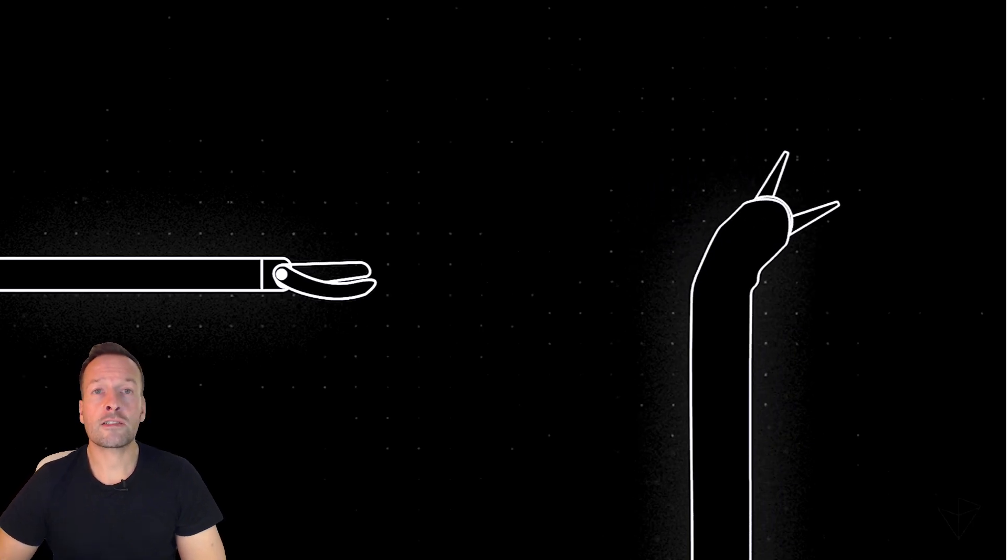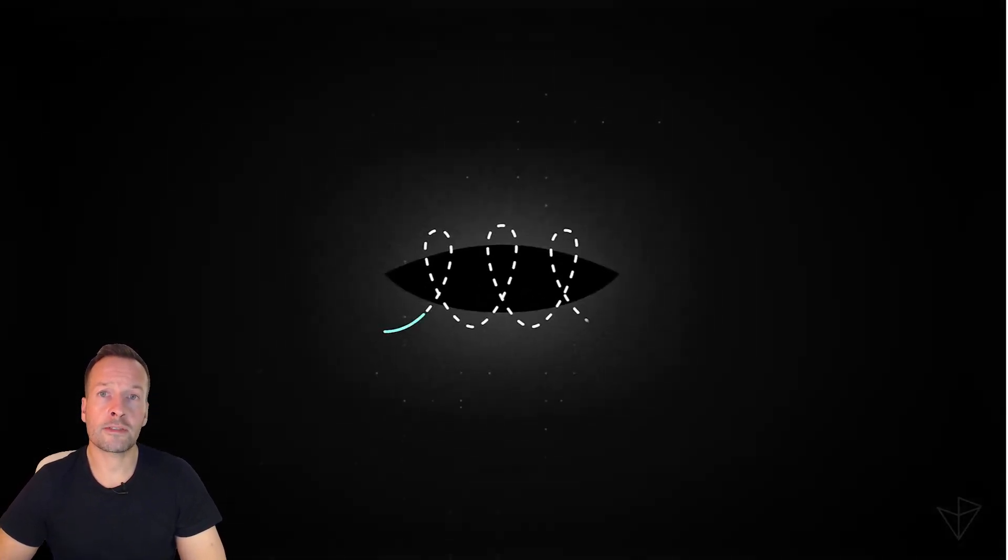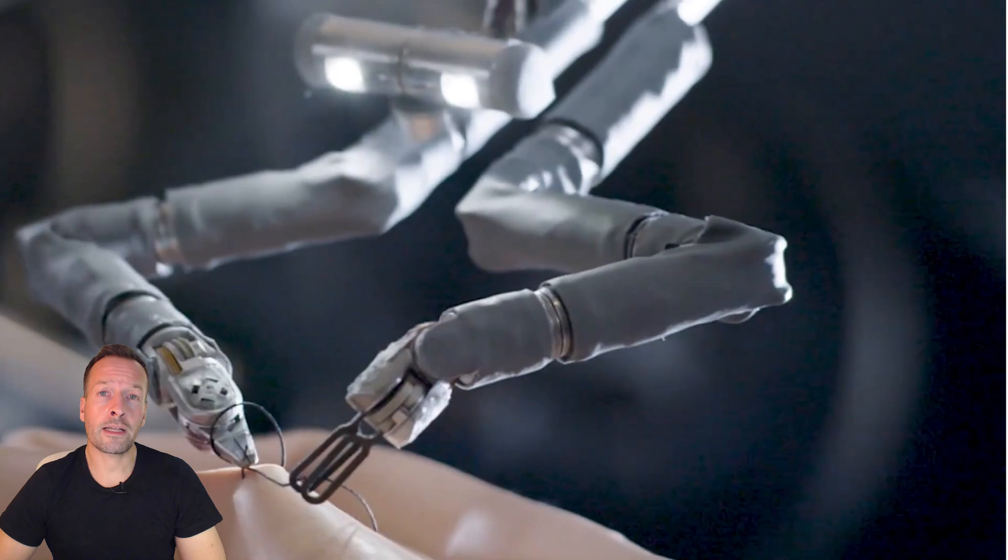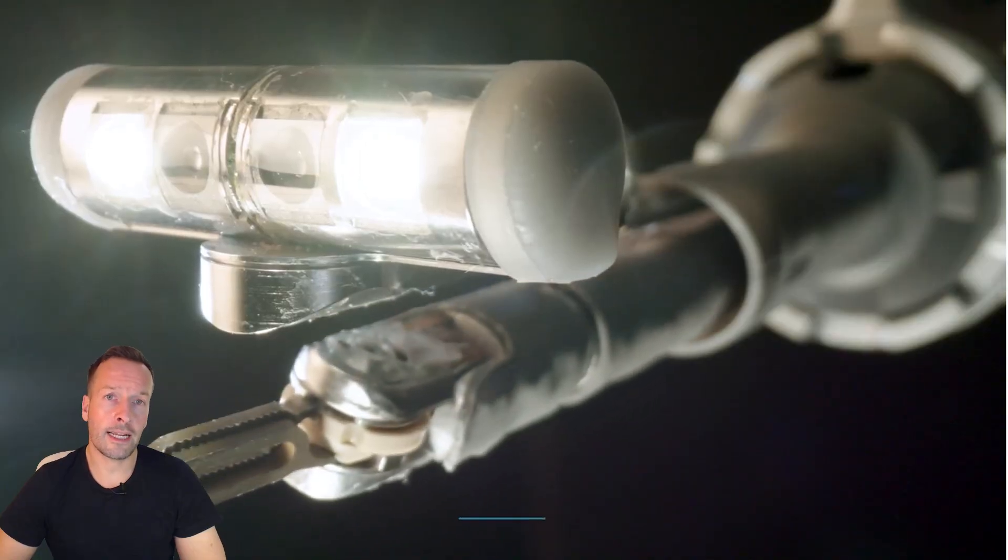The Vicarious Surgical system includes a patient cart with agile robotic arms and a surgeon console. The robotic arms perform intricate maneuvers inside the body, making surgery less dramatic and promoting faster healing.